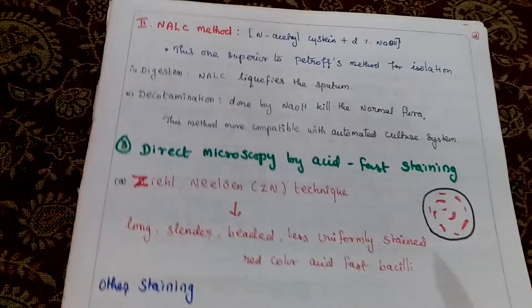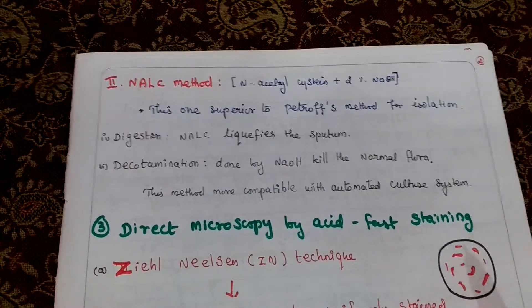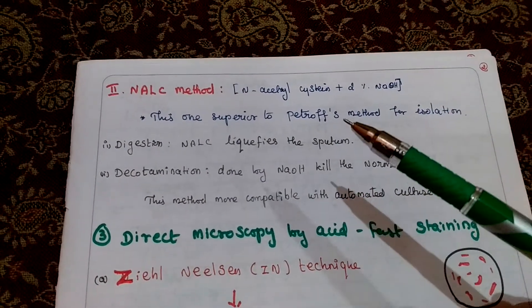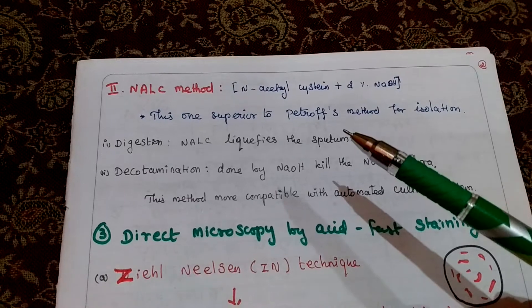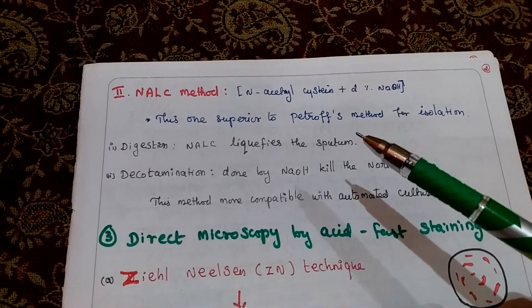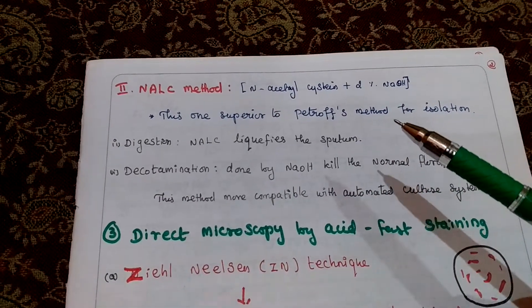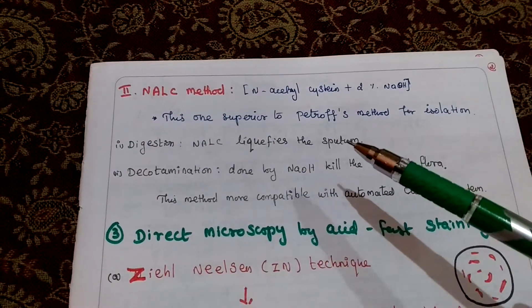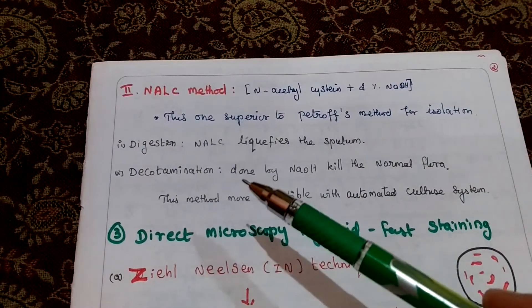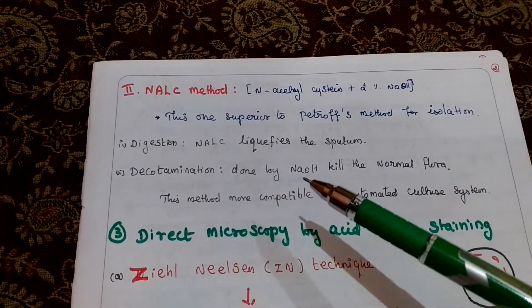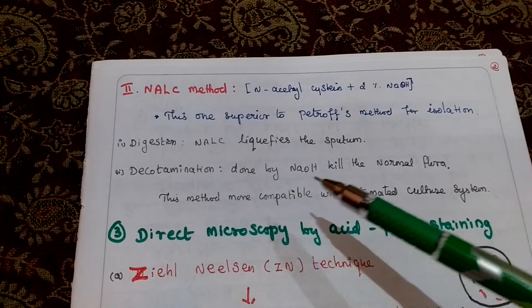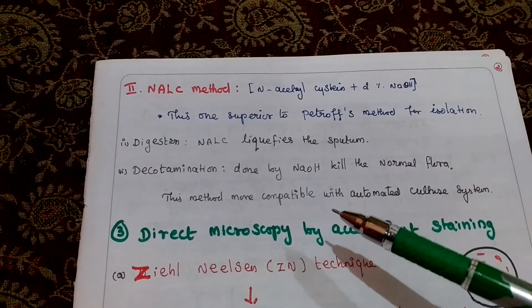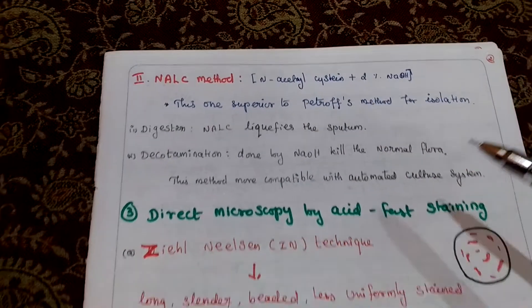The second method is the NALC method — N-acetyl-L-cysteine with 2% NaOH. This is the superior method compared to the Petroff method. For isolation, digestion uses NALC to liquefy the sputum, and decontamination uses NaOH to kill the normal flora. This method is equal to automated culture systems.